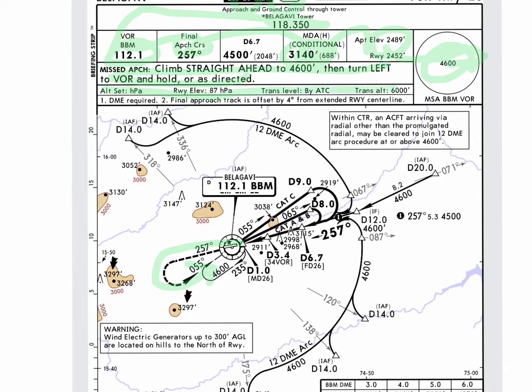Altitude setting: 21 hectopascal runway elevation, 87 hectopascal. Transition altitude 6000, transition by ATC. DME is required. Final approach track is offset by 4 degrees from the extended centerline. VOR frequency is 112.1, Bravo Bravo Mike.